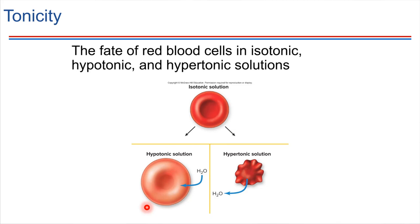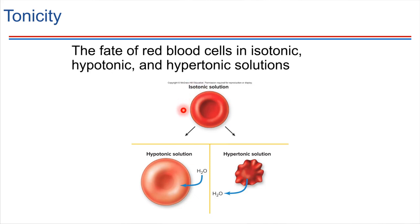Let's come back to this slide and review a couple of things. There are three different types of tonicities for solutions that we typically encounter. An isotonic solution means that the driving force for osmosis is the same in as it is out, so water movement happens equally in both directions.